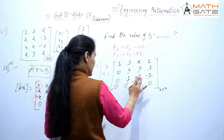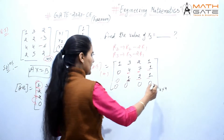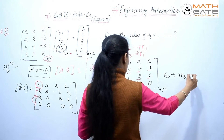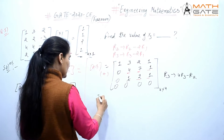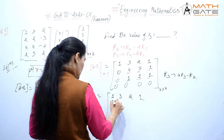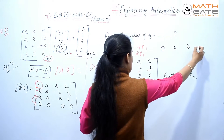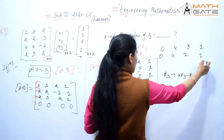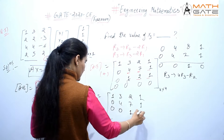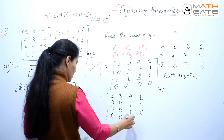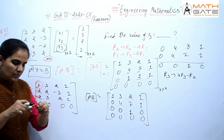We can take minus common from rows 2 and 3, making all elements positive. Then to eliminate the element in row 3, we apply R3 → 4R3 - R2: 4×0-0=0, 4×1-4=0, 4×2-7=1, 4×(-1)-(-1)=0... wait, correcting: 0, 0, 1, 0. Row 4 remains 0, 0, 0, 0. So the final augmented matrix is: row 1: 1, 3, 2 | 1; row 2: 0, 4, 7 | 1; row 3: 0, 0, 1 | 0; row 4: 0, 0, 0 | 0.